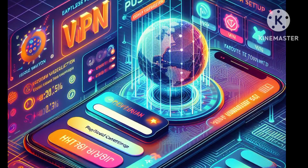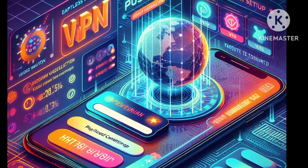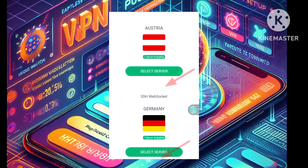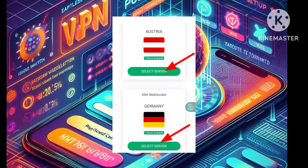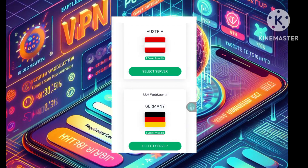Step 3: Now it's time to select a location for your SSH WebSocket server from the provided list. Click on Select Server to proceed.